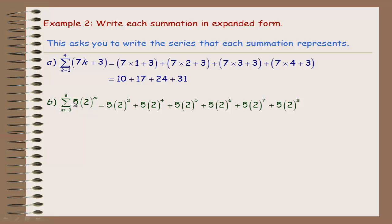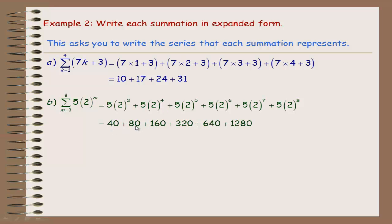The next summation has the term 5 · 2^m, starting with m = 3, not 1 — you're not always starting with 1. So the first term is 5 · 2^3, then 5 · 2^4, up to 5 · 2^8 as the last term. There are only 6 terms, so we can write them all out: 40, 80, and so on up to 1280.